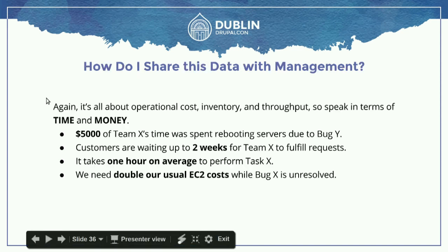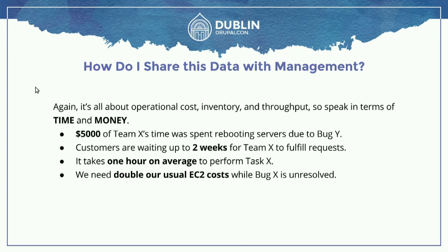Then you can take this data and share it with management. So how do you approach management? Remember — they care about operational cost, inventory, and throughput. You have to speak in terms of time and money. If you're able to articulate in these example statements, you're going to have a lot of power: '$5,000 of Team X's time is spent rebooting servers due to bug Y.' 'Customers are waiting up to two weeks for Team X to fulfill requests.' 'It takes one hour on average to perform task X.' 'We need double our usual EC2 costs while bug X is unresolved.' Time and money.